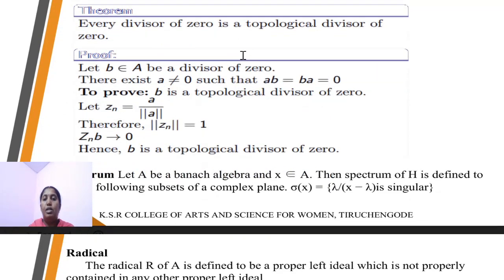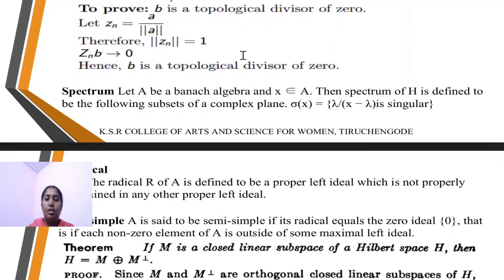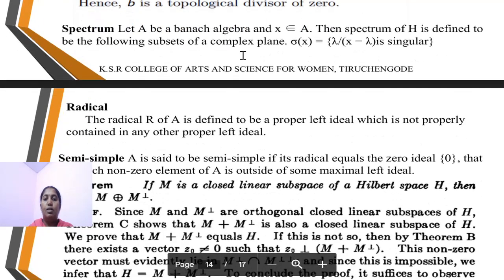Next theorem: every divisor of 0 is a topological divisor of 0. Proof: let b in A be a divisor of 0; that is, there exists a ≠ 0 such that ab = ba = 0. To prove b is a topological divisor of 0, let zₙ = a/‖a‖. Therefore ‖zₙ‖ = 1, that is zₙb → 0. Hence b is a topological divisor of 0. The proof is complete.